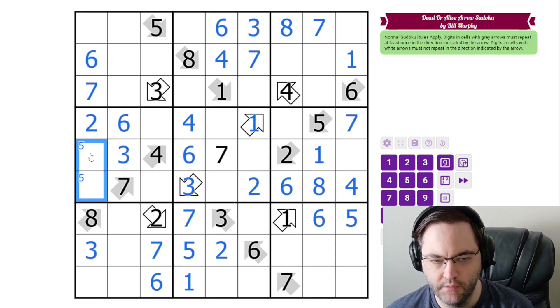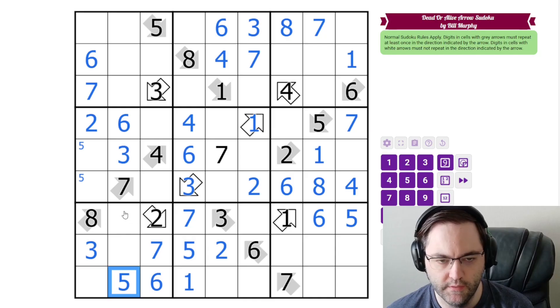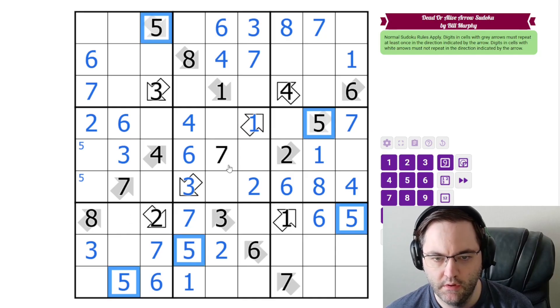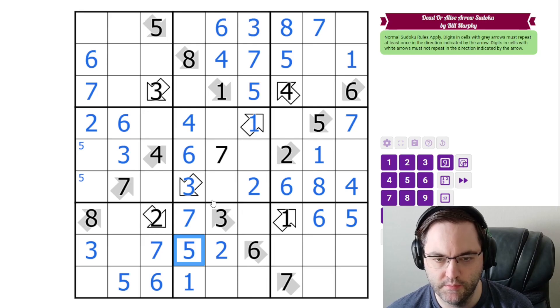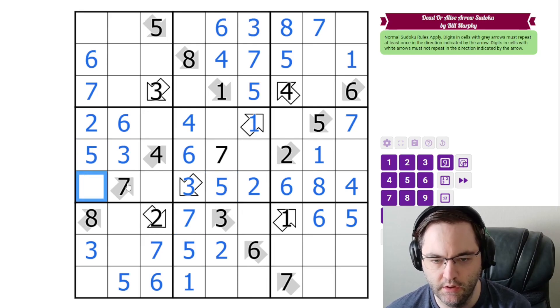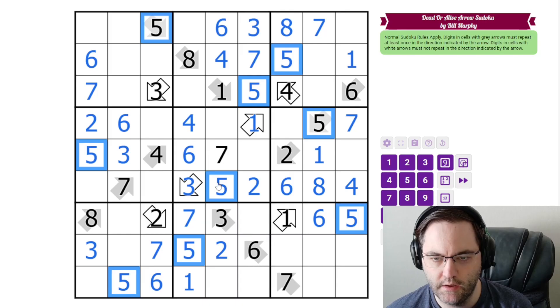5 goes in one of these cells, but we've limited 5 in this column. So this is not 5. This is. And 5 in this box has to go here. Which means 5 has to go here because of this 5. Which means 5 has to go here and here. That should be all the 5s.